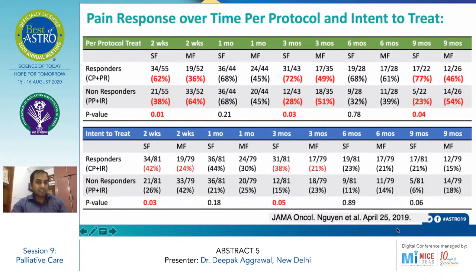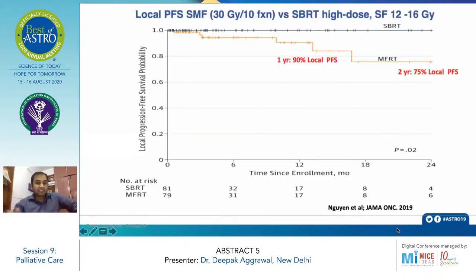For the primary clinical outcome — pain response over time per protocol analysis — patients who received single fraction responded better at 2 weeks, 3 months, and 9 months, which was statistically significant compared to multi-fraction. At 2 weeks, the response rate was 62% in single fraction versus 36% in the multi-fraction arm. The intention-to-treat analysis also showed single fraction had a greater response at 2 weeks and 3 months. Progression-free survival in the SBRT arm was 100% at 2 years, while multi-fraction was 90% at 1 year and 75% at 2 years.